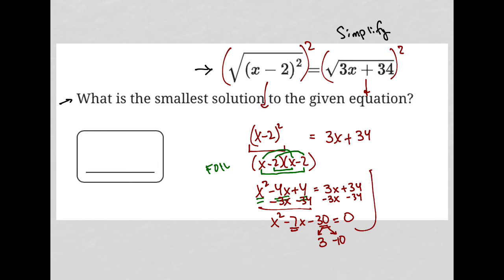So that means that x squared minus 7x minus 30 becomes x plus 3—that's my positive 3—and x minus 10—there's my negative 10. And this is, of course, equal to 0.